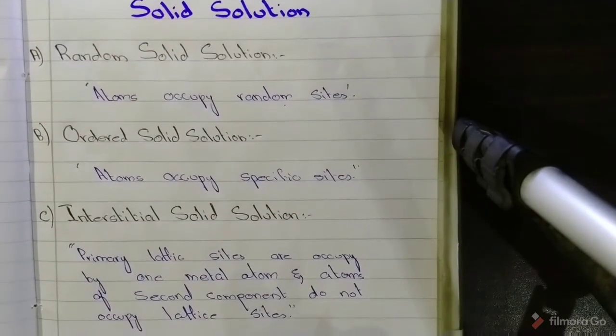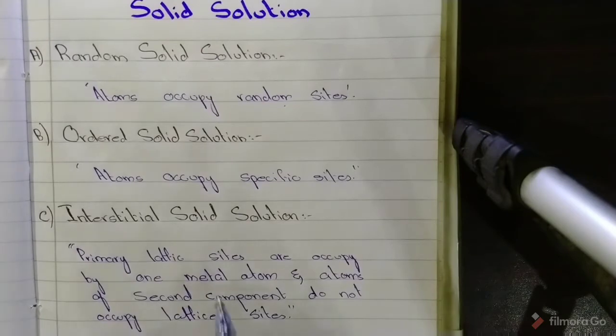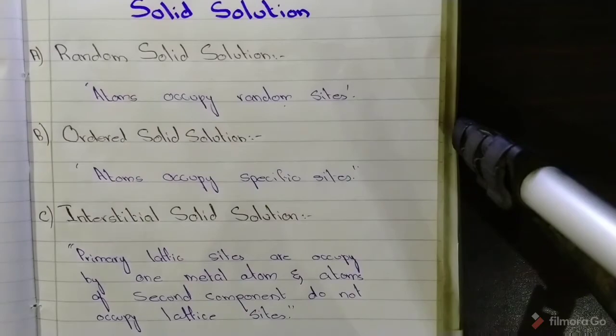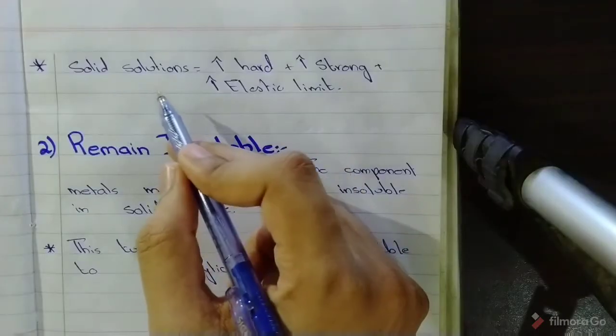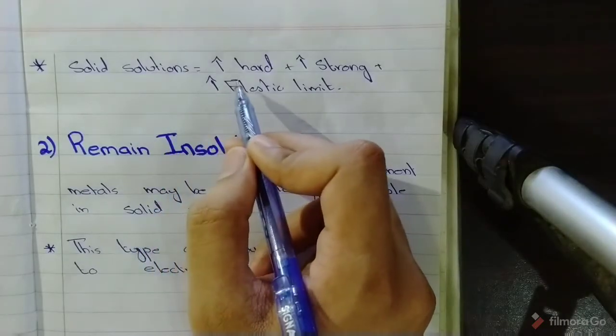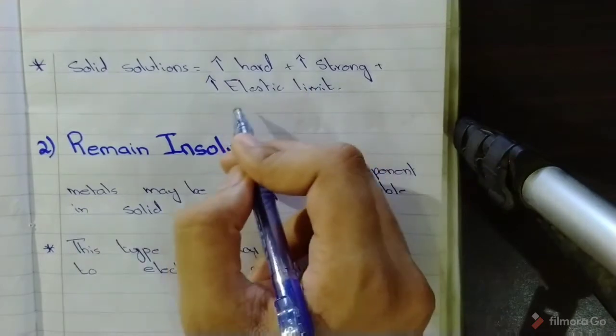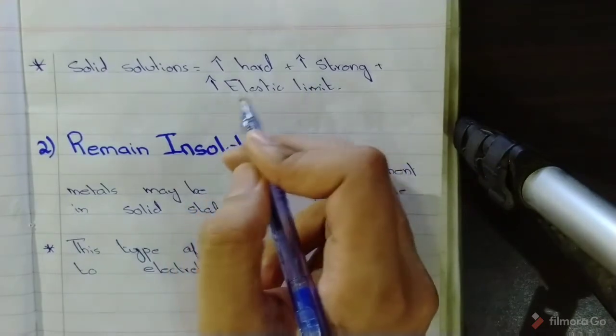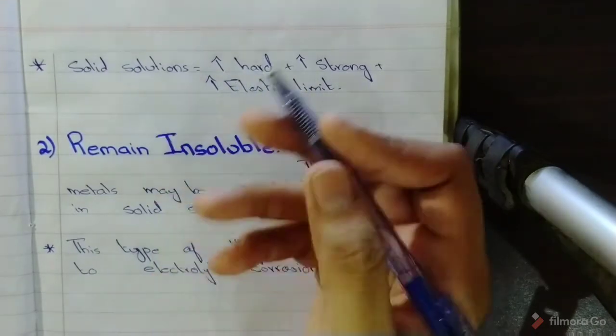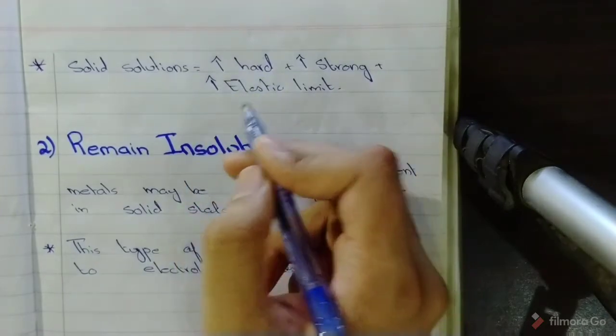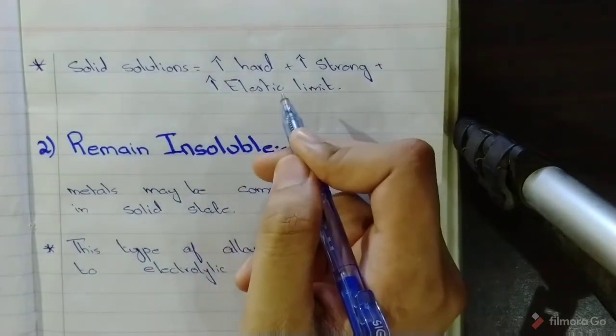In interstitial solid solution, primary lattice sites are occupied by one metal atom, and atoms of the second component do not occupy lattice sites. These solid solutions are more hard, more strong, and they have more elastic limit than pure metals. That is why pure metals are rarely used for applications in dentistry.